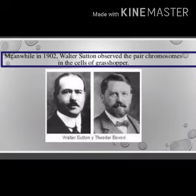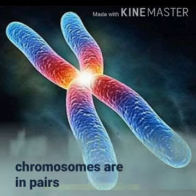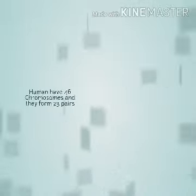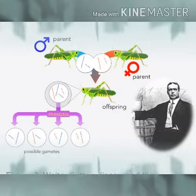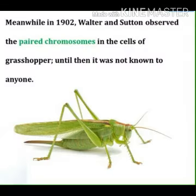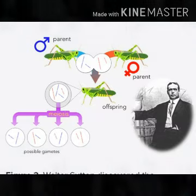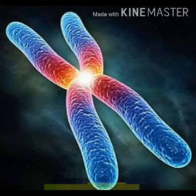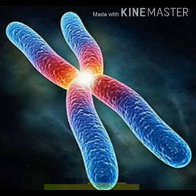The third scientist, in 1902, Walter and Sutton observed that chromosomes are in pairs. Our body consists of 23 pairs of chromosomes. They observed pairs of chromosomes in a grasshopper's body — the grasshopper was the animal in which Walter and Sutton first found chromosomes in pairs, which was unknown to anyone till then. As soon as it was proved that genes are carried via chromosomes, research started in the direction of finding the nature of genetic material.